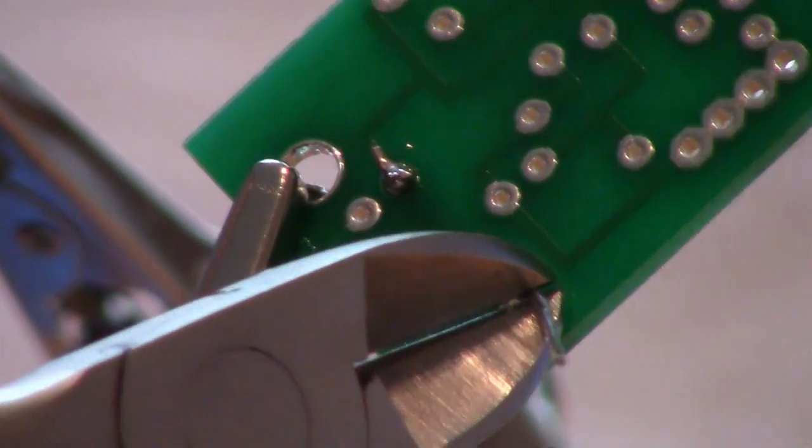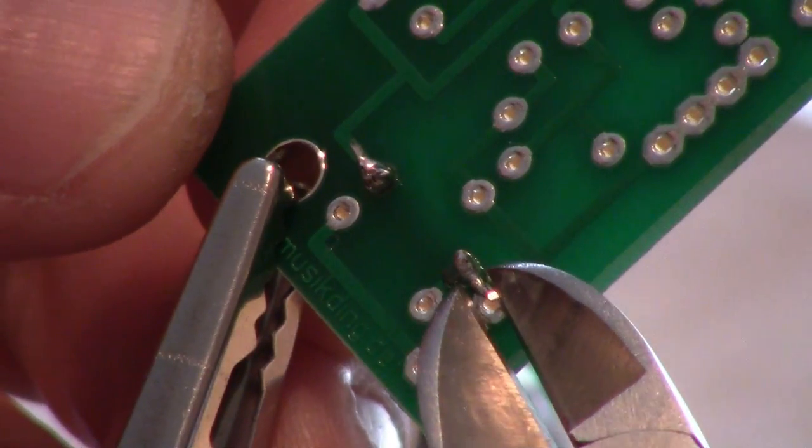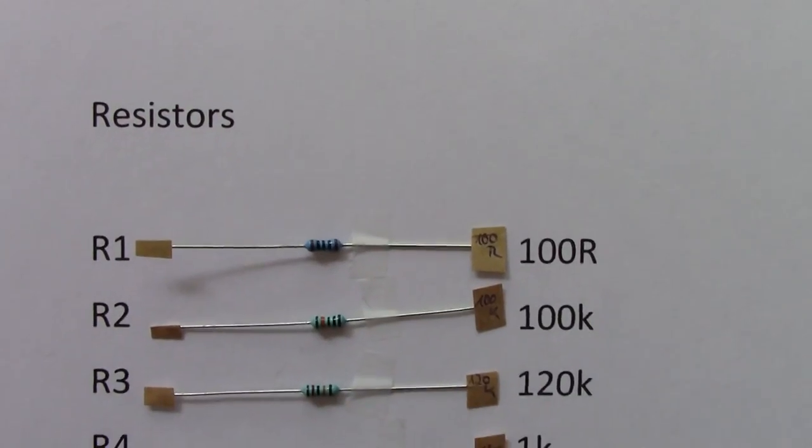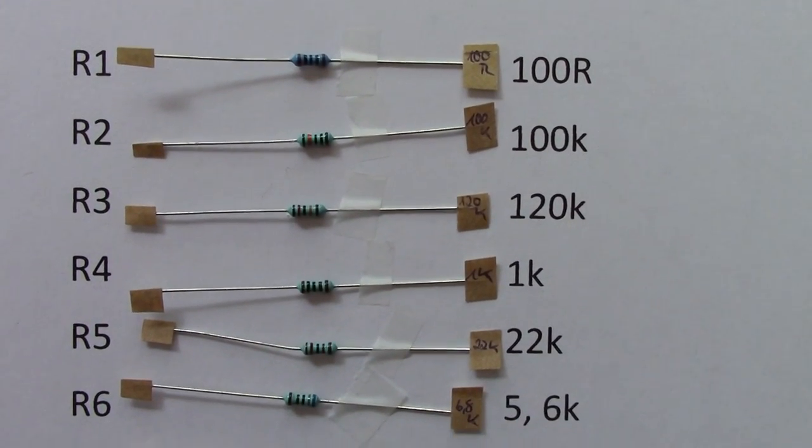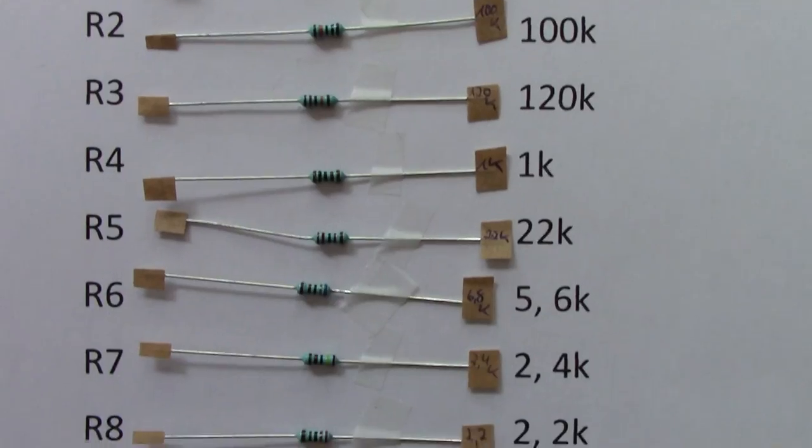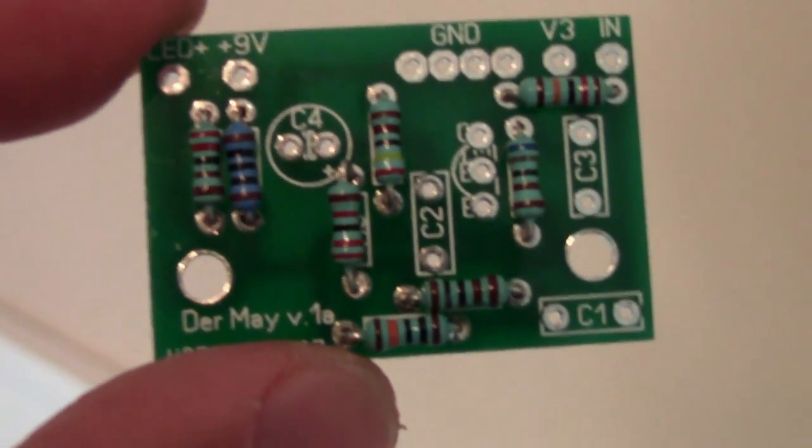You have successfully soldered the first resistor to the board. Continue this process for the remaining resistors. There are a total of eight in all. Once all resistors are installed, your board will look something like this.